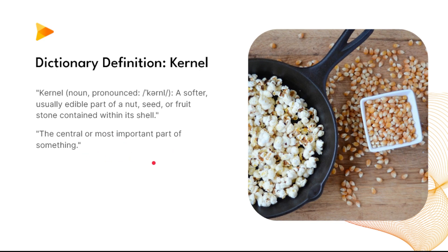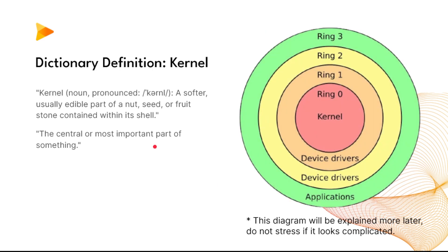You might or might not have heard the word 'kernel' before, so let me define it. The dictionary gives an older definition — a soft, usually edible part of a nut or seed — but more relevantly, a kernel is the central or most important part of something. I like to think of it as the core. The kernel is at the core of the operating system, at ring zero, right in the center.